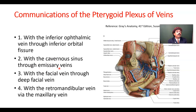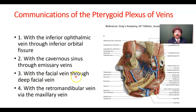What is an emissary vein? Emissary veins are veins which communicate the intracranial dural venous sinuses to the extracranial veins. Emissary veins have no valve, so blood may flow in both directions. Usually blood flows from the intracranial space to the outside, but it may go in either direction. With the facial vein, it communicates via the deep facial vein. With the retromandibular vein, it communicates via the maxillary vein.